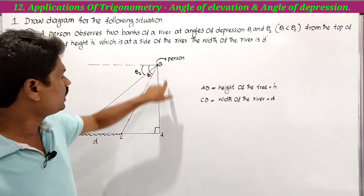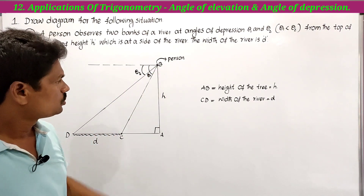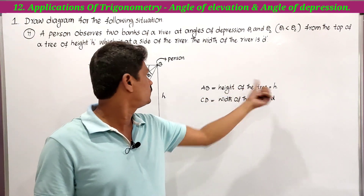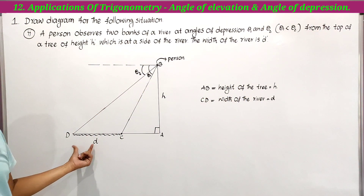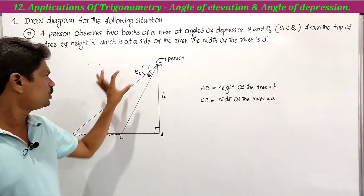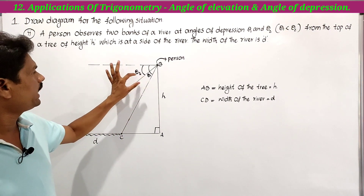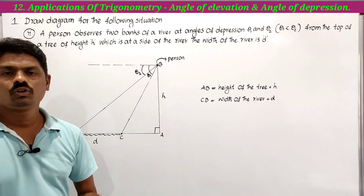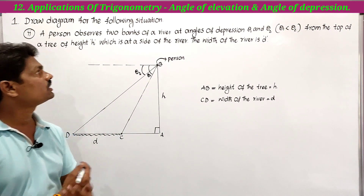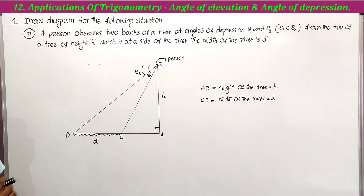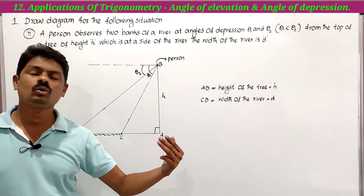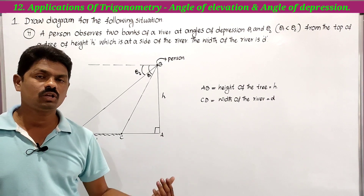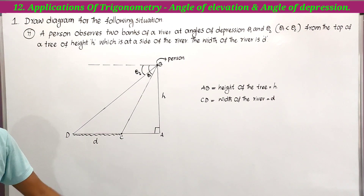H is the height of the tree, so AB equals the height of the tree h. CD equals the width of the river d. These two angles are the angles of depression. This is the suitable figure for the second situation. In the next class, we will solve the first problem from Exercise 12.1. Thanks for watching.